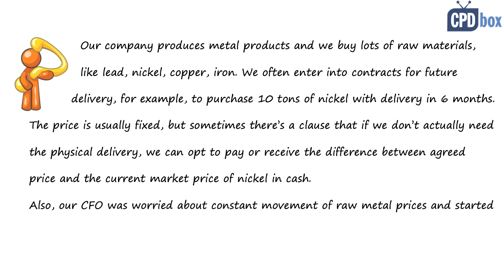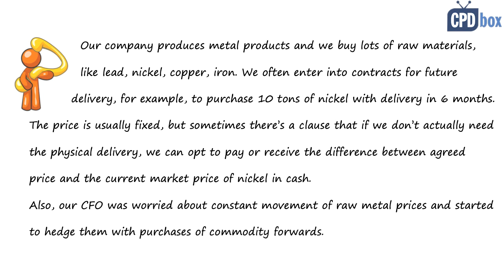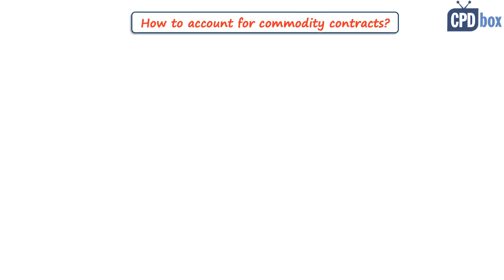Also, our CFO was worried about constant movement of raw metal prices and started to hedge them with purchases of commodity forwards. How can we account for this type of contract? Excellent question. Normally you should account for similar contracts as for purchases of inventory. But Lee felt there was something different about the contract.